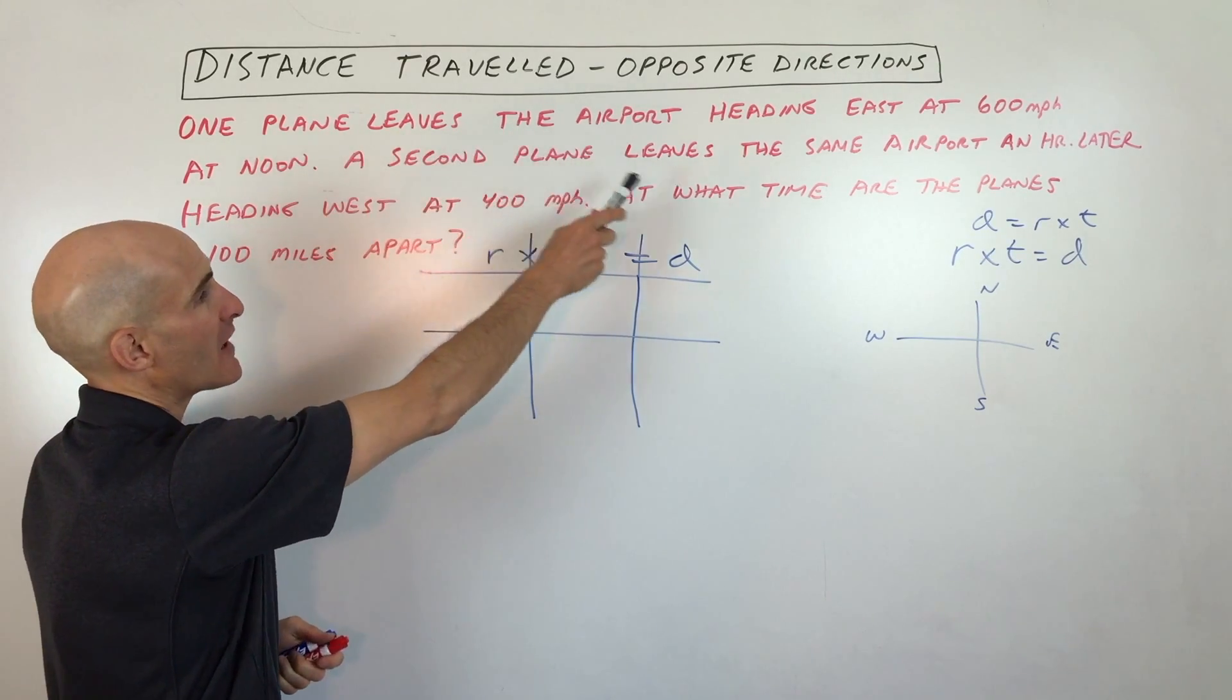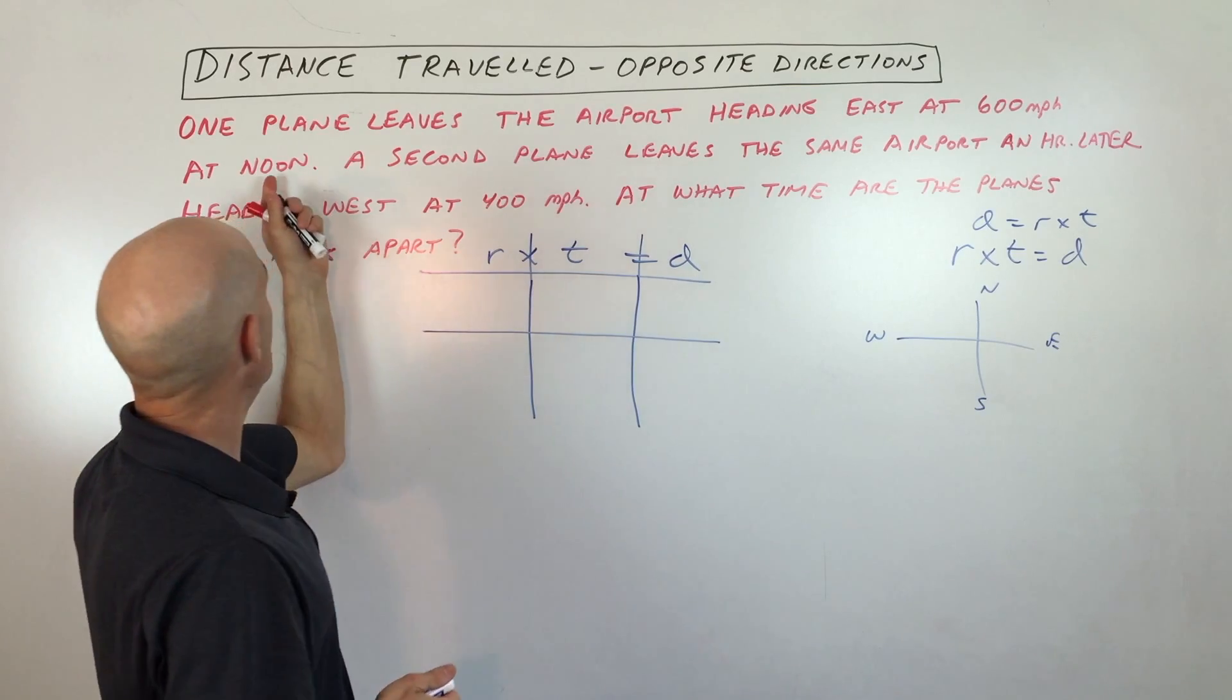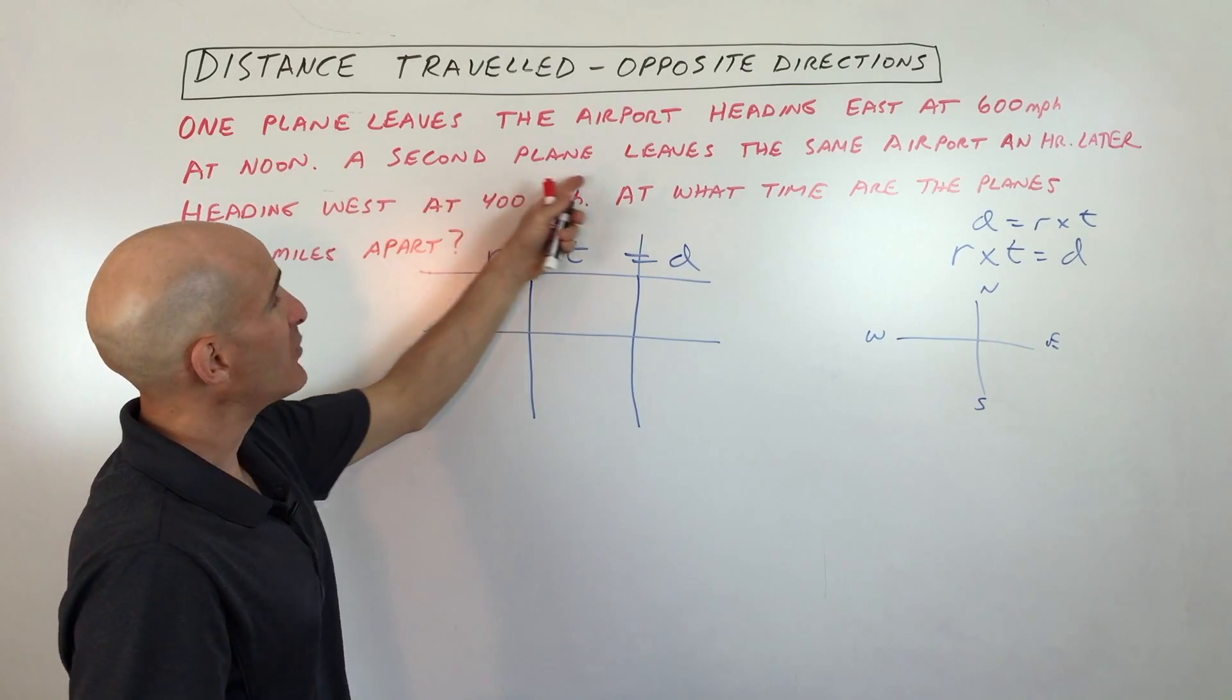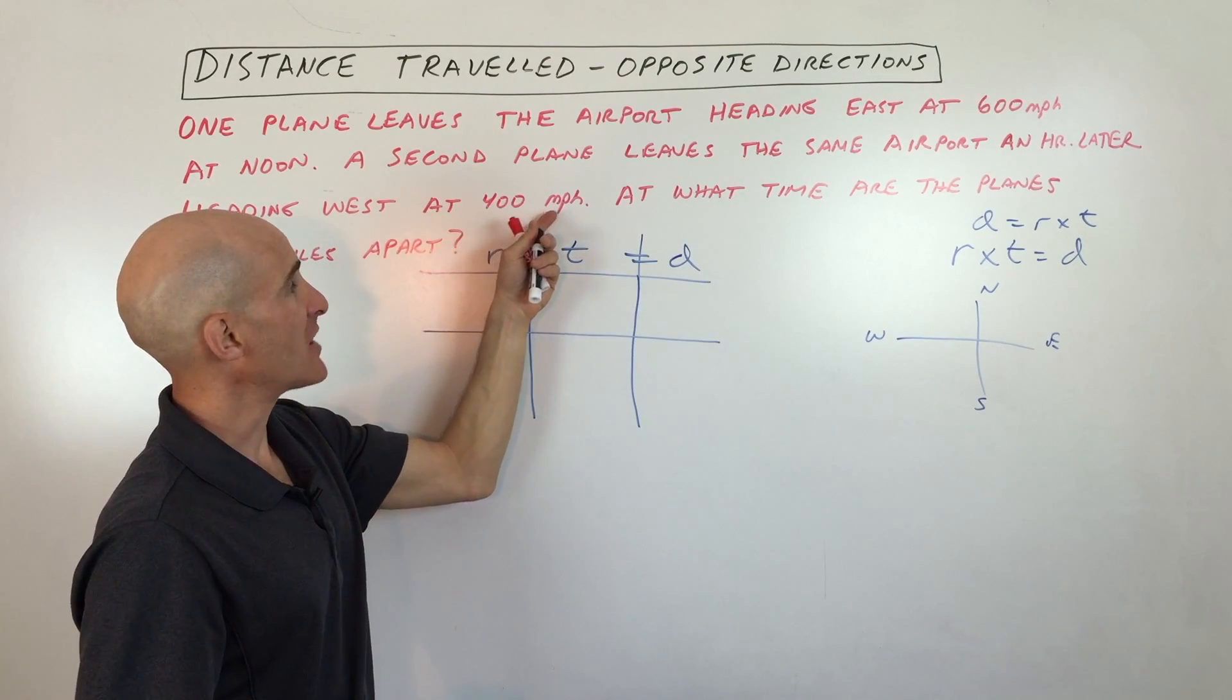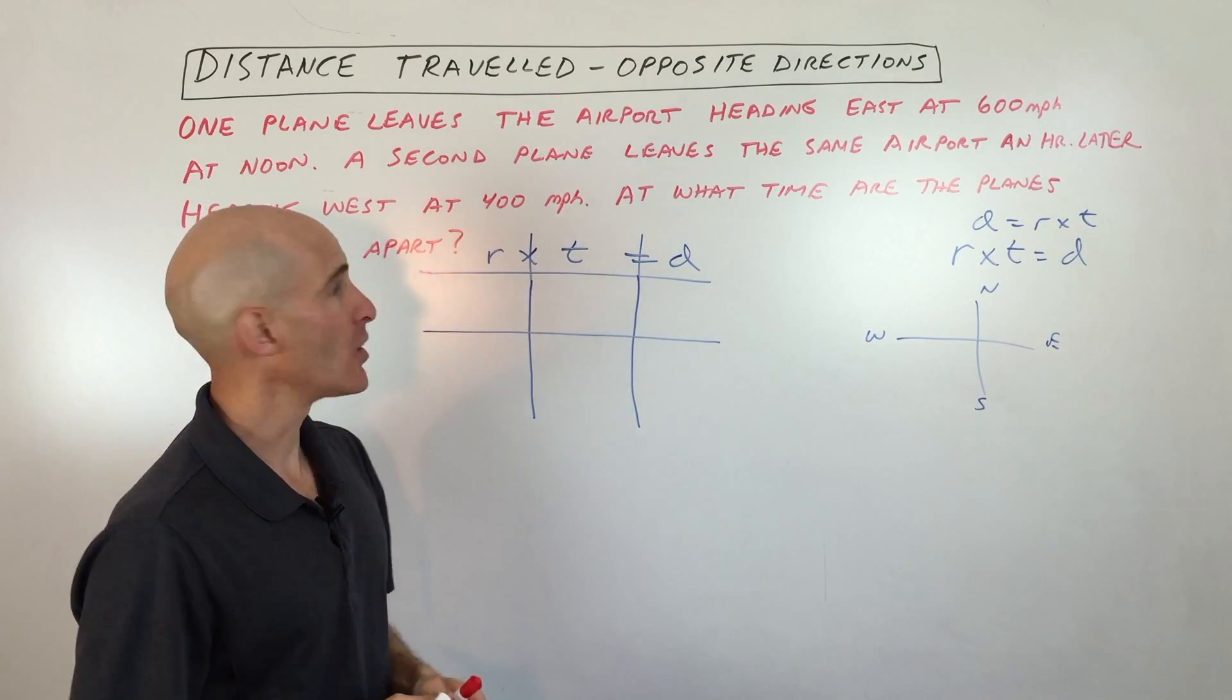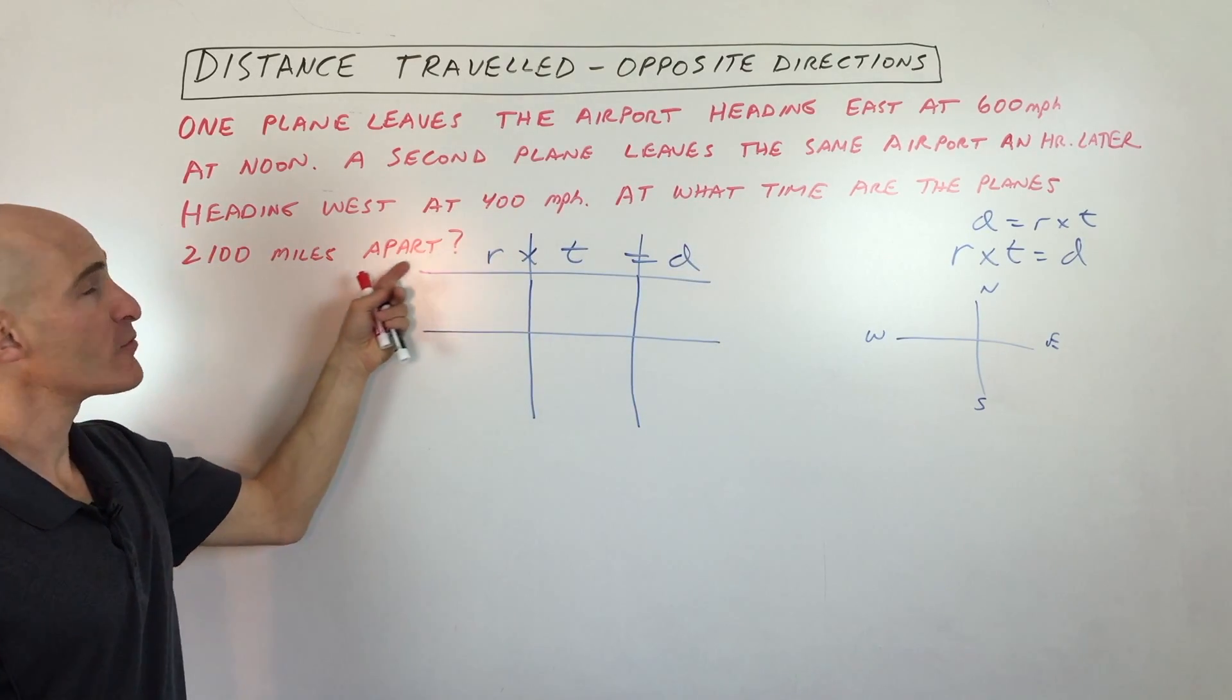One plane leaves the airport heading east at 600 miles per hour, and that's at noon. Then a second plane leaves the same airport an hour later heading west, the opposite direction, at 400 miles per hour, so a little bit slower. At what time are the planes 2,100 miles apart?